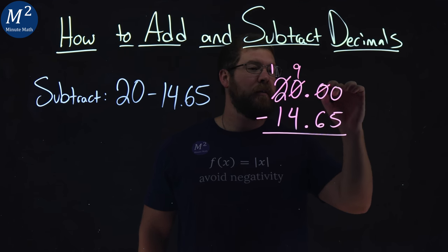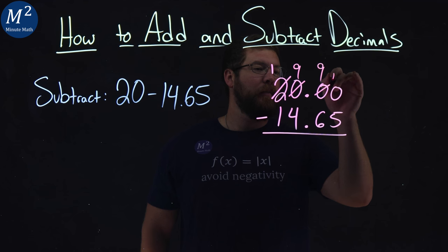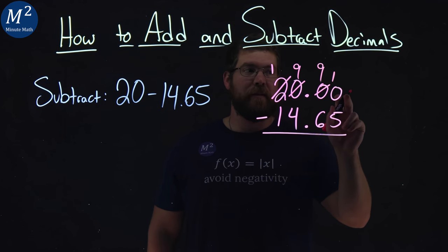So we're going to turn that into a 9, this one to a 9, and then add the 10 here to this last 0.